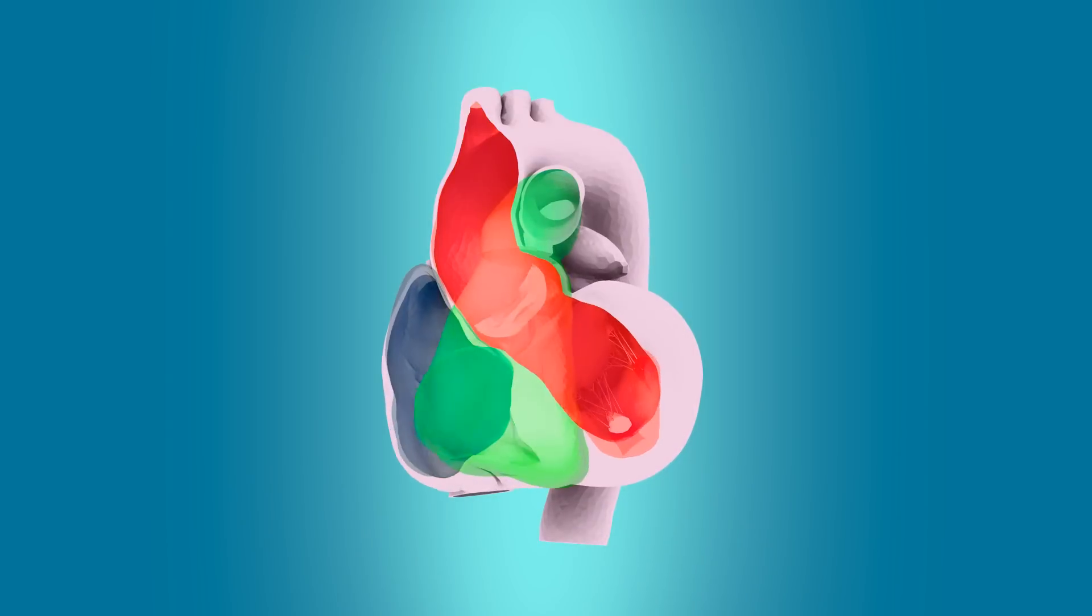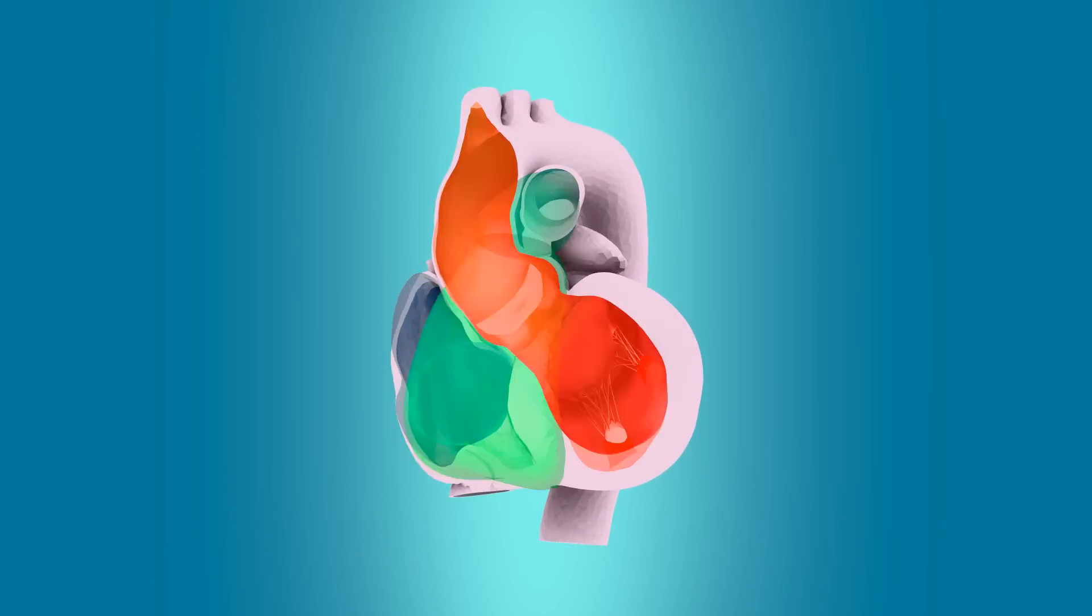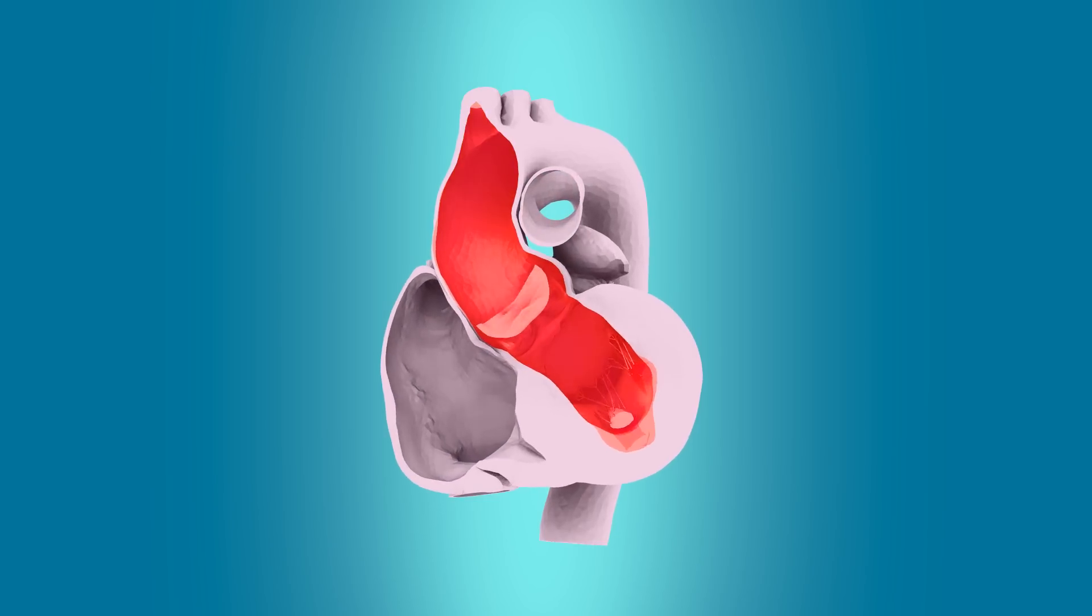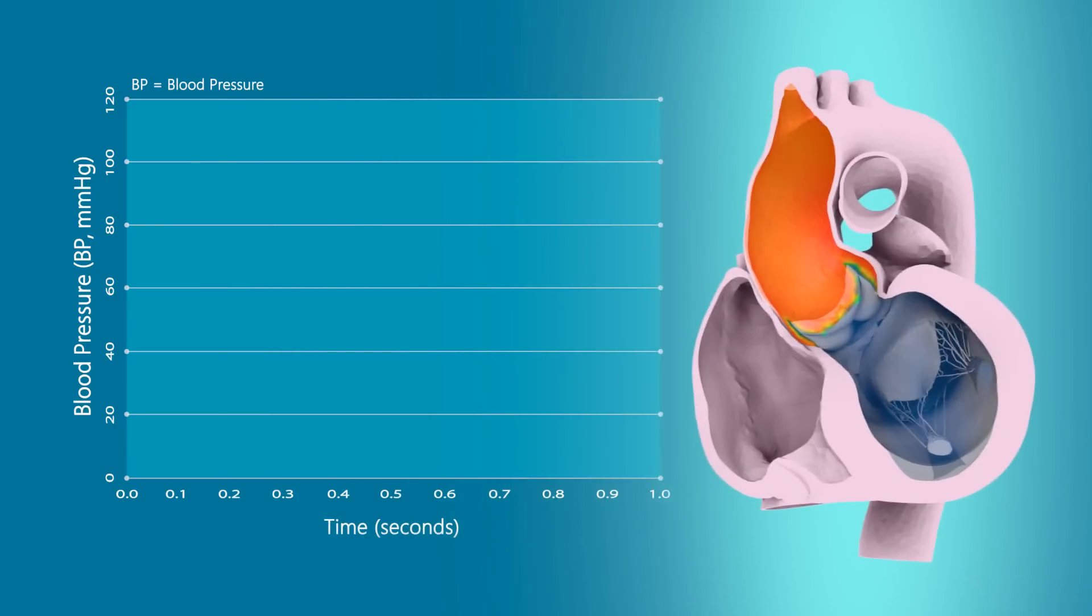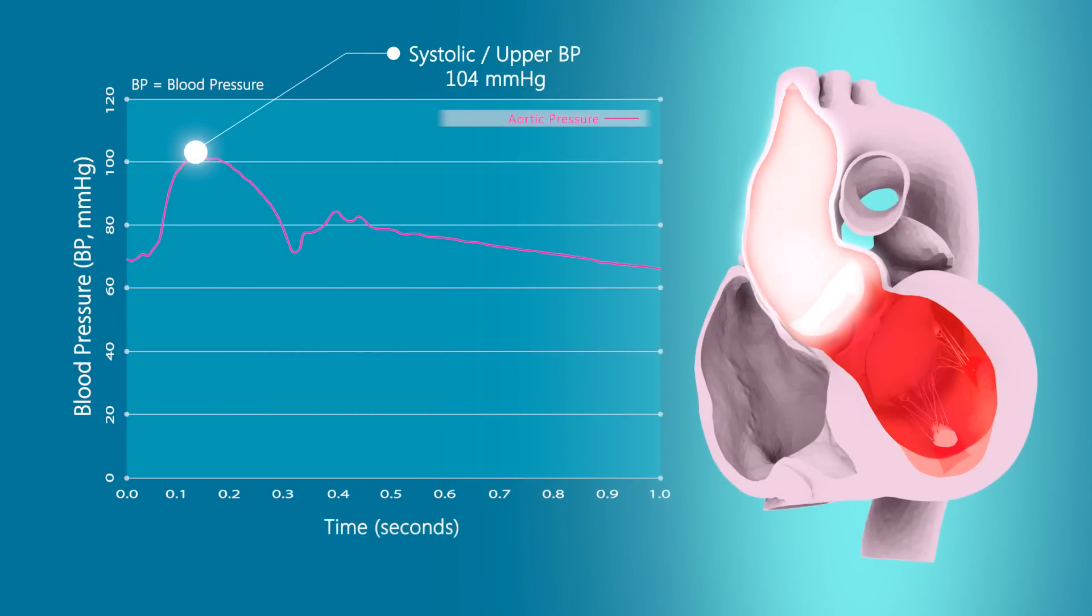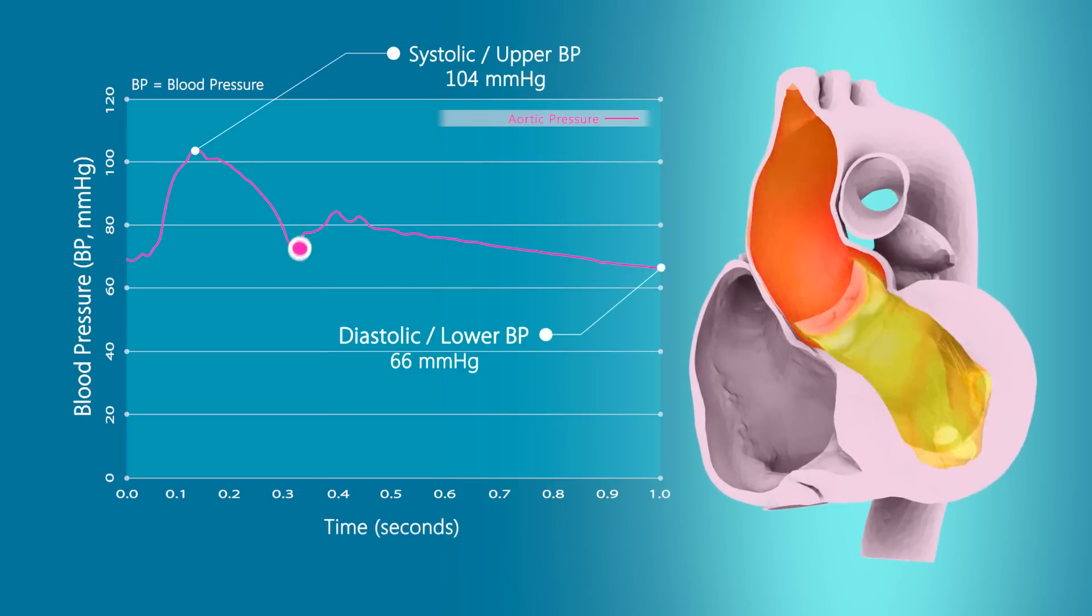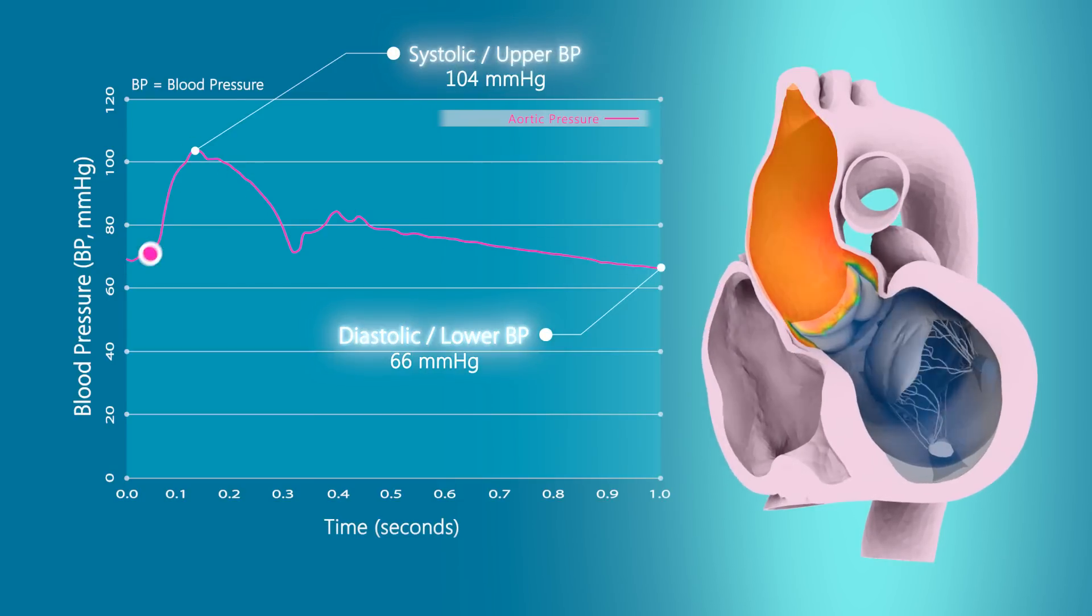Blood pressure can also be calculated under the simulation. In general, what is known as blood pressure is the pressure of the aorta. When graphed, blood pressure is highest when the heart contracts and is lowest when it relaxes. These are the upper and lower blood pressures.